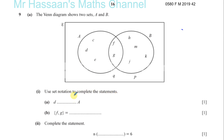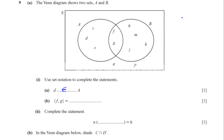It says D and blank, then A. Well, D is an element of the set A, and element has this symbol — like a funny kind of E. D is an element of set A. That's how we can describe D.